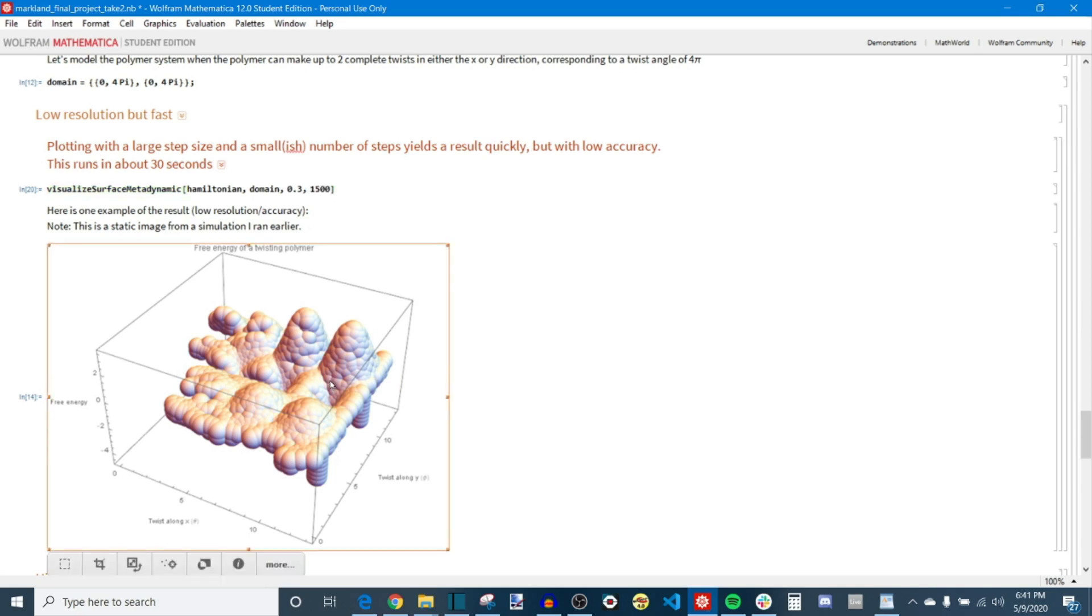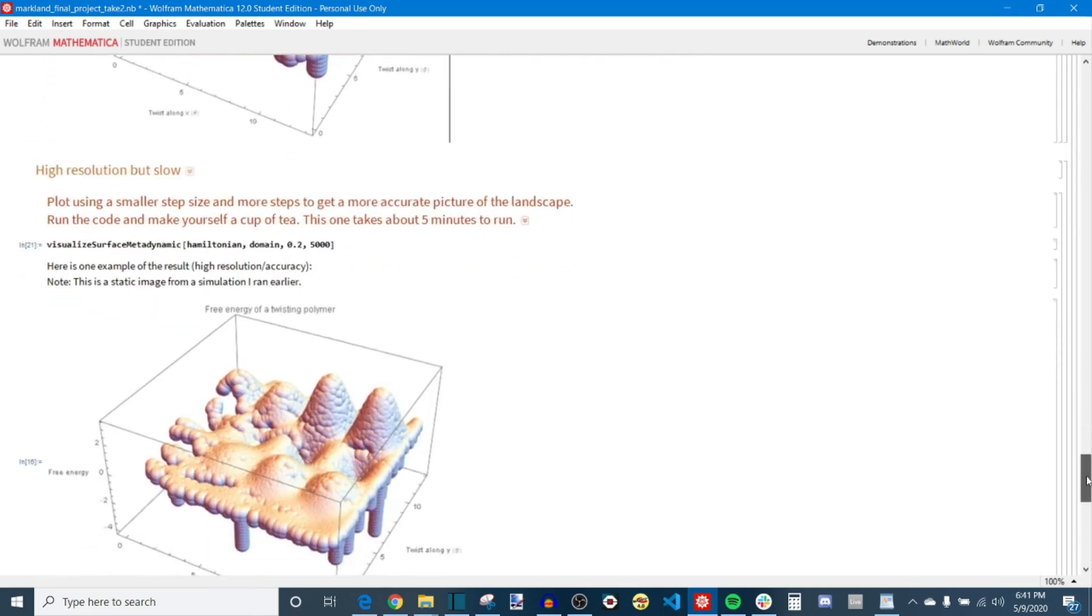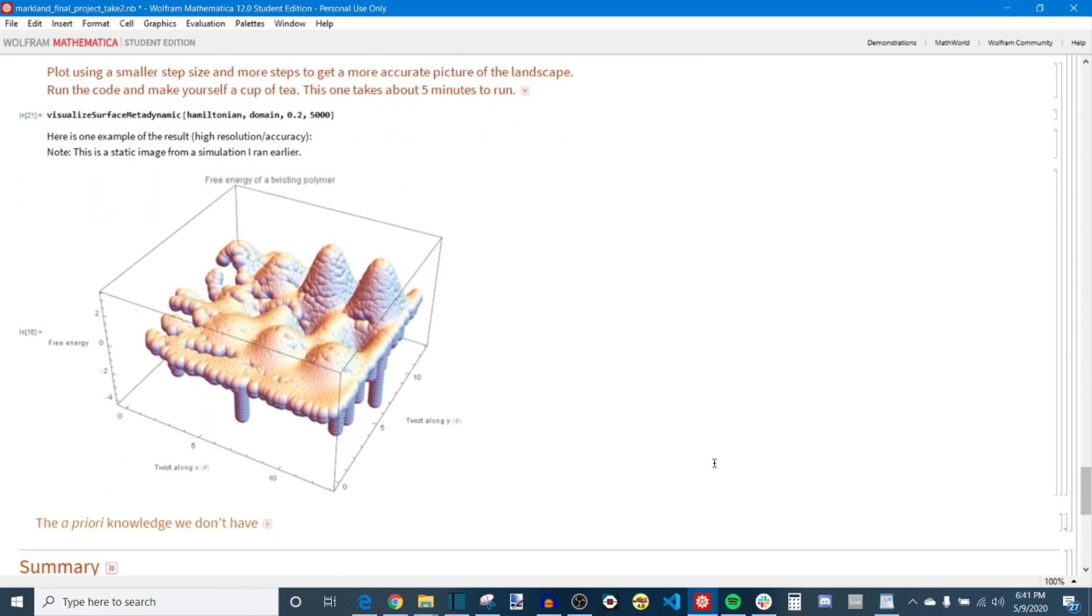So this is what it looks like with a relatively large step size and a smaller number of steps. We can see that we have a clear picture of what the landscape looks like. But if you decrease the step size and increase the total number of steps, you can get a landscape that's much more accurate and true to the true landscape shape. The only downside is it takes significantly longer to run it.